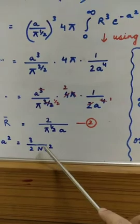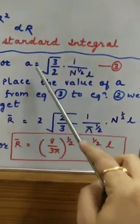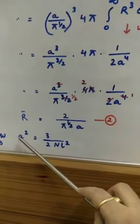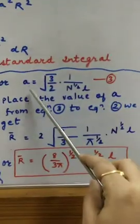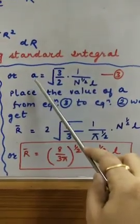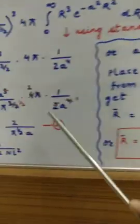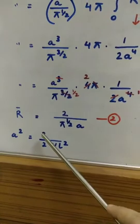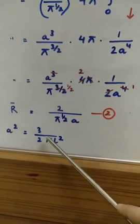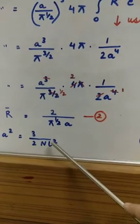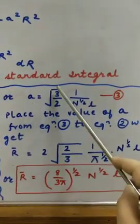Now we will solve this. If we are talking about a², we are moving towards a, so we have to square root all the things. What we are getting, here it was 3 by 2, so it will become root 3 by 2 and n to the power half l². After taking the square root, we get l. So here we have written, a is equal to root 3 by 2, 1 upon n to the power half l.